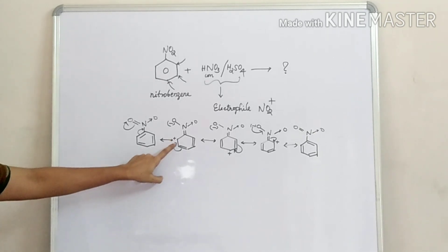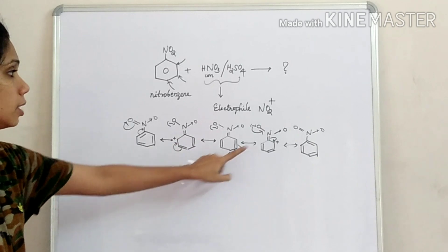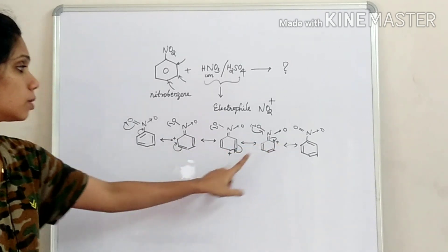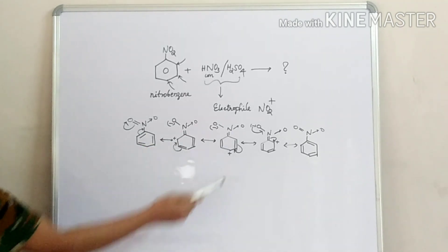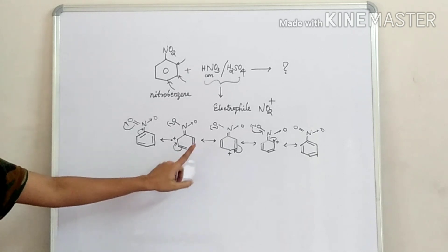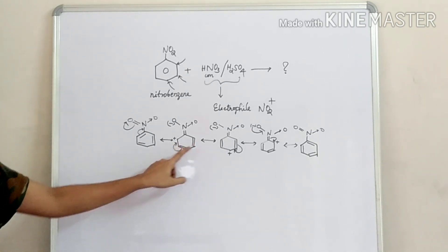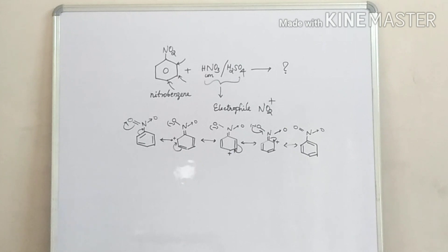The electron is deficient at the ortho and para positions. Ortho position is here, ortho position is here, and para position is electron deficient. If there is a plus charge at the meta position, it means the meta position is not electron deficient. So the electrophile attacks the meta position.